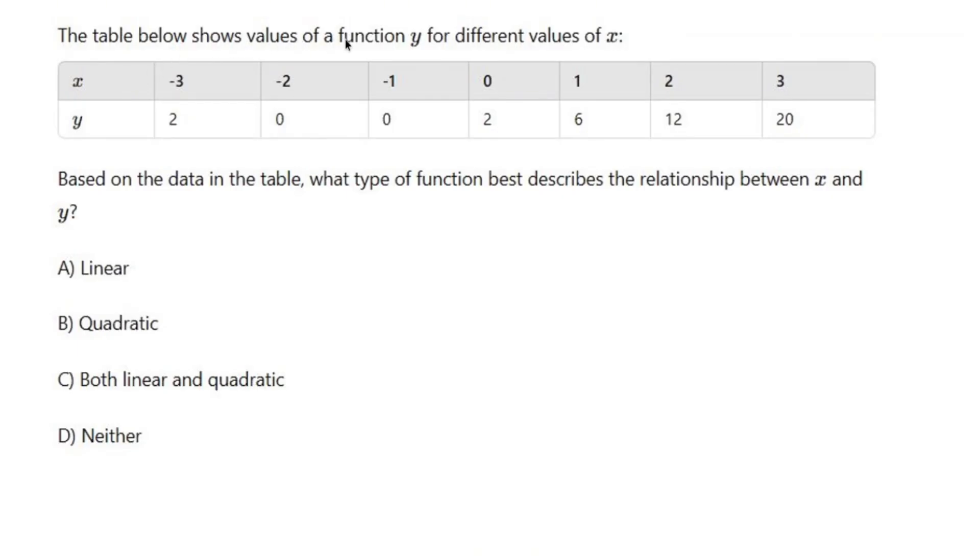The table below shows values of a function y for different values of x. So x goes up by 1 every time, y is all over the place. Based on the data in the table, what type of function best describes the relationship between x and y?